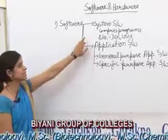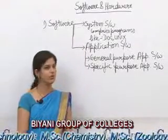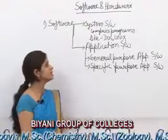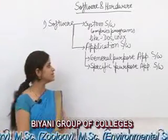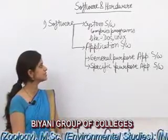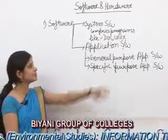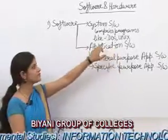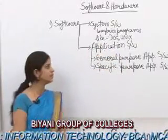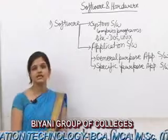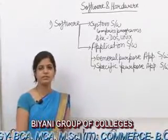First of all, I will define system software. System software is a collection of programs which are designed to control and operate the computer system. It comprises various programs like DOS, UNIX, and Linux, and system software works in the operating system.